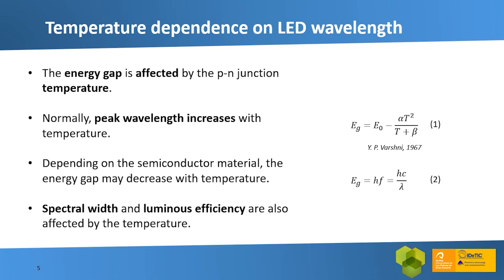On the other hand, the wavelength of an LED is related to the energy gap of the semiconductor substrate, which is affected by p-n junction temperature. The energy gap is usually modeled using equation 1. Also, the wavelength and energy gap are related to each other by equation 2. In general, the energy gap decreases as temperature grows. So, as wavelength is inversely proportional to energy gap, the peak wavelength of the LED increases with temperature. Apart from peak wavelength, the spectral width and luminous efficiency are also affected by temperature.